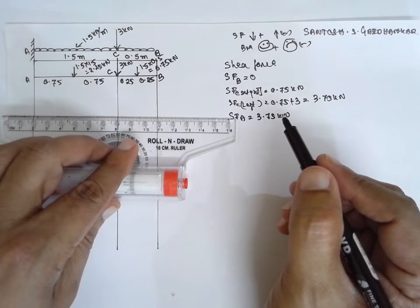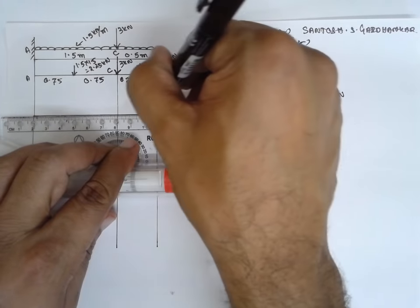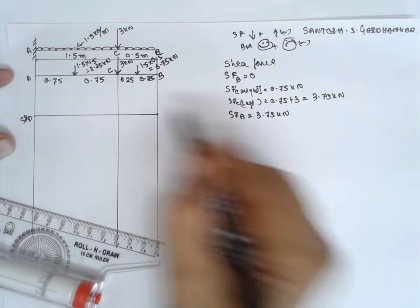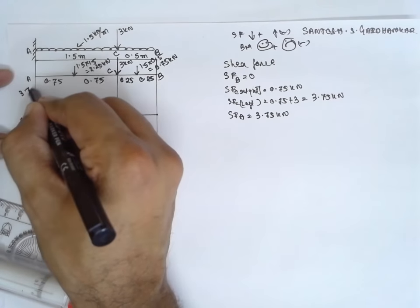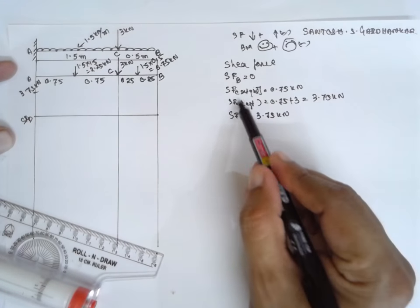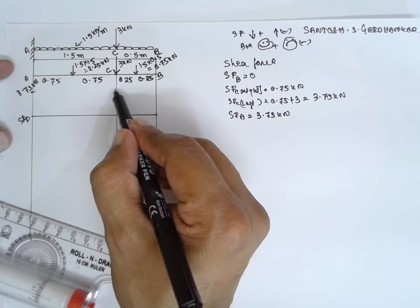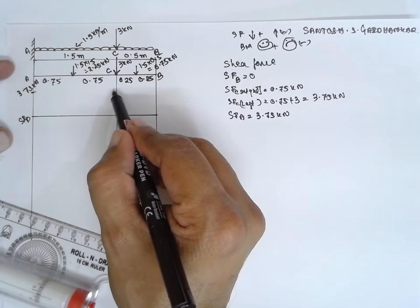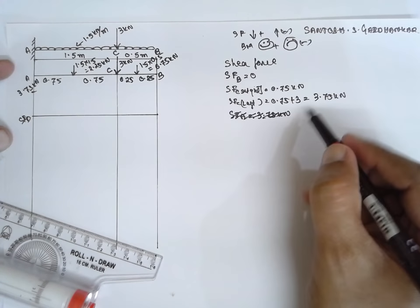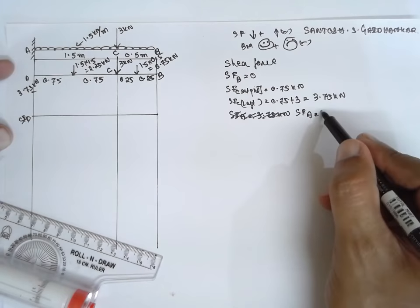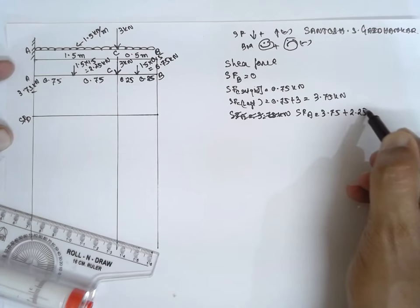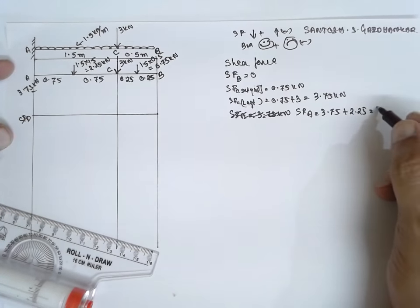Now, draw shear force diagram here. This is SF diagram. The first value for A is 3.75 kilonewton. Next, at C, there are two values. First is 3.75. Oh sorry, I made a mistake here. SF at A, the previous value is 3.75 plus this value plus 2.25. If you add it, the answer will be 6 kilonewton.